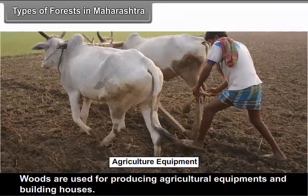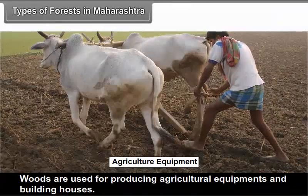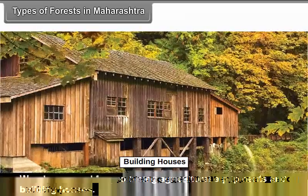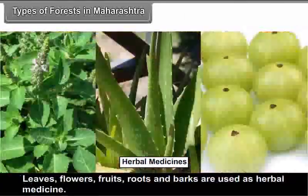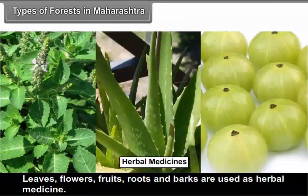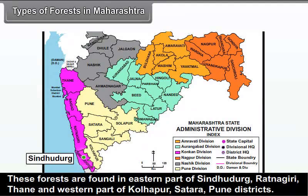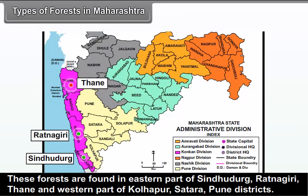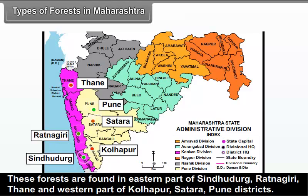Woods are used for producing agricultural equipment and building houses. Leaves, flowers, fruits, roots and barks are used as herbal medicine. These forests are found in the eastern part of Sindhudurg, Ratnagiri, Thane and western parts of Kolhapur, Satara and Pune districts.